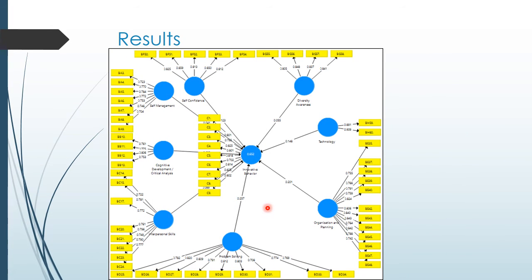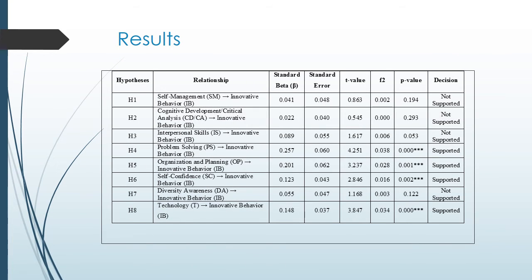For the results, the path analysis shows the relationship between each dependent variable and the independent variable of innovative behavior. From these results, only four hypotheses are supported: problem solving, organizational and planning, self-confidence, and technology. The remaining variables — self-management, cognitive analysis, interpersonal analysis, and diversity awareness — are not supported.